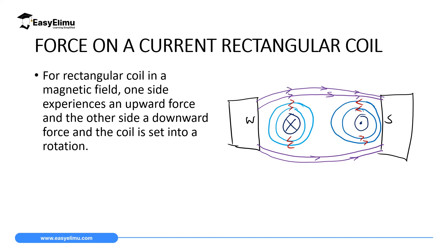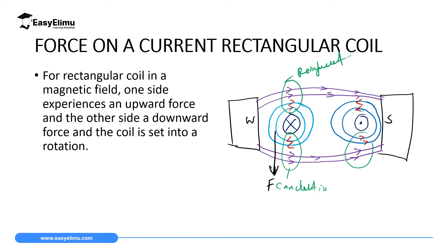For the first wire, above it the field moves in the same direction — reinforcement — but below it the field moves in opposite directions — cancellation. Since this wire moves from the region of reinforcement toward the region of cancellation, this wire moves downward with force F. For the second wire, below it the fields move in the same direction — reinforcement — and above it they move in opposite directions — cancellation. Therefore this second wire moves upward.